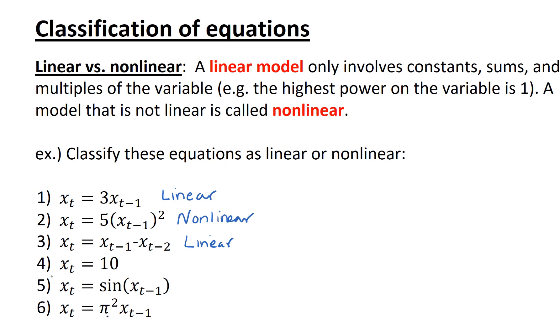In the fourth example, we have x sub t equals 10. This is still a linear model, because the highest power is 1. It could be less. In fact, in this case, it's 0. But this is a linear model.